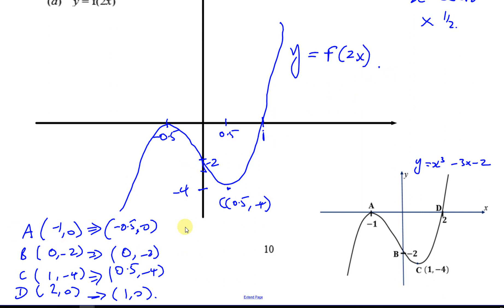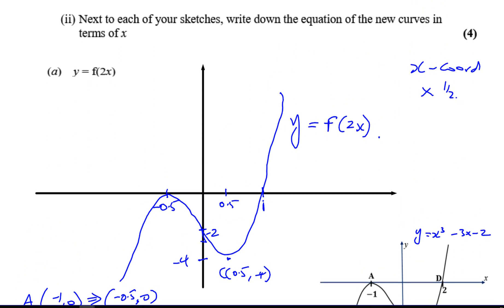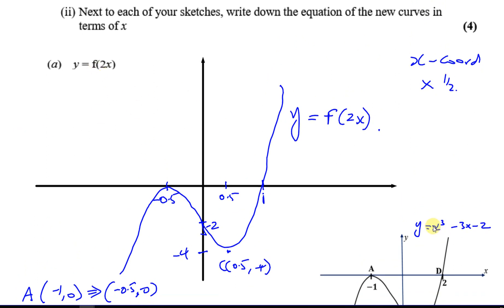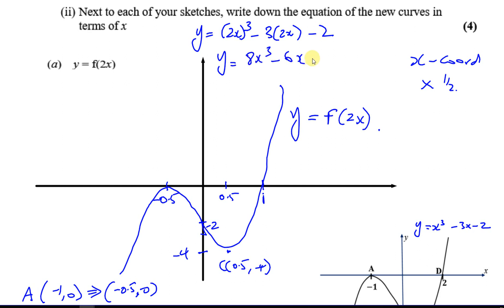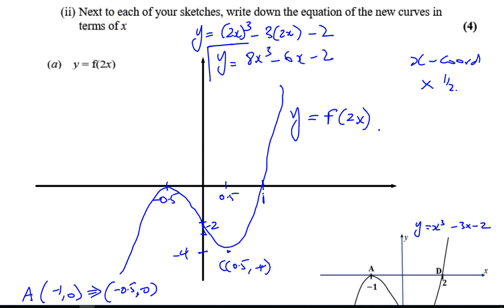Now we write down the new equation. To get it, we replace x with 2x in the original equation: y equals (2x)³ minus 3 times (2x) minus 2, which gives y equals 8x³ minus 6x minus 2. That's the new equation of the curve — replace x with 2x in the original equation.